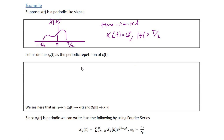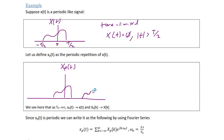Let us define xp(t) as a periodic repetition of x(t). xp(t) repeats in either direction, with copies at t₀ and negative t₀. As t₀ goes to infinity, xp(t) approaches x(t), and xp(k) approaches x(k), where x(k) is the spectrum of x(t).